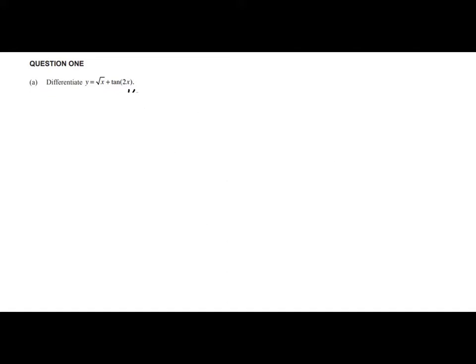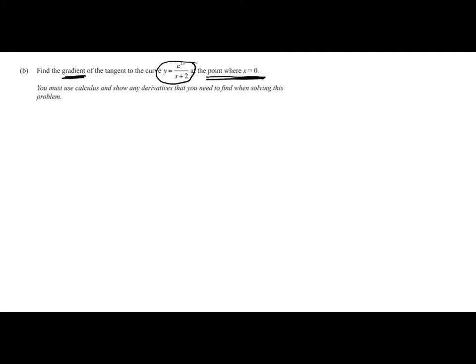Now, the next question is the same kind of thing, just more straightforward differentiation. Okay, so in this question, we're going to have to find the gradient at the point where x equals 0. So there are a couple of steps here. First, we differentiate, and then we substitute in x equals 0.